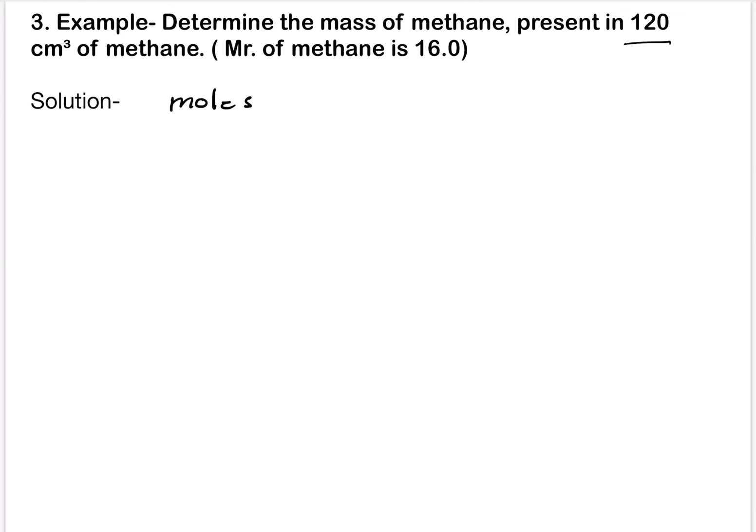Moles of methane CH4 will be equals to volume that is in decimeter cube divided by 24. Now let's solve this. What is the value given? 0.120. That's because we converted 120 centimeter into decimeter cube divided by 24 equals to 5 into 10 to the power minus 3 mol.